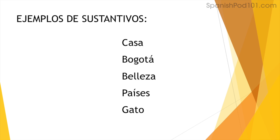Let's start with some examples of sustantivos. On screen we have: casa, Bogotá, belleza, países, gato. As you can see, nouns are words that describe a large spectrum of things — pretty much everything. In Spanish, nouns can describe things with life or without life. They can be a thing, a person, an animal, an idea, something abstract like a feeling. Those are sustantivos.